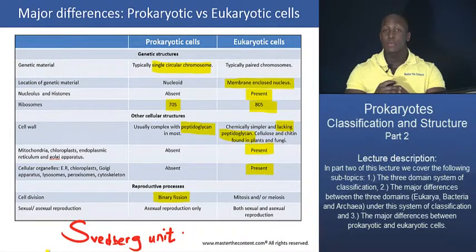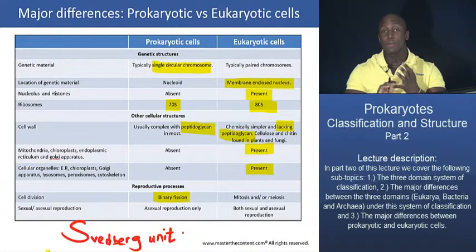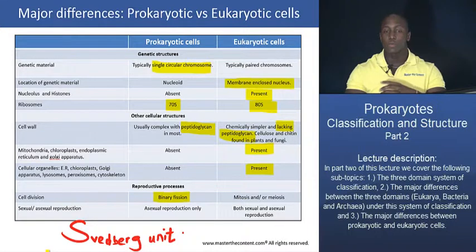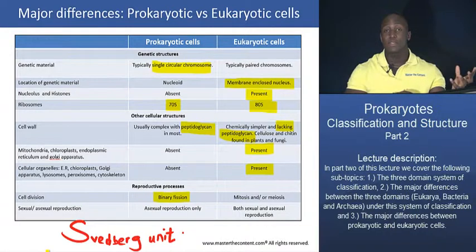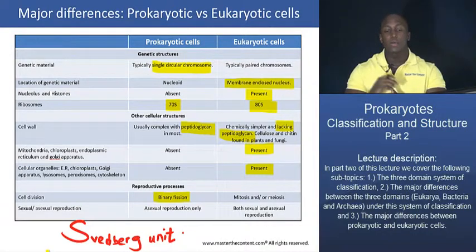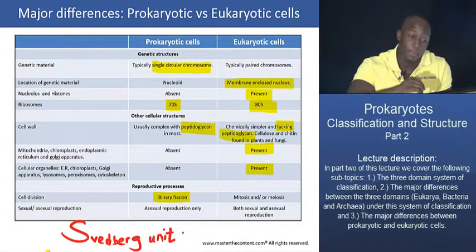Eukaryotic organisms can reproduce both sexually and asexually, depending on the organism. The processes they use are either mitosis, meiosis, or a combination of both. So the primary cell division process in prokaryotes is binary fission, whereas in eukaryotic cells division results from a mitotic or meiotic process. Prokaryotes can only reproduce asexually, although they do have mechanisms for sharing genetic material, which we'll cover later in this lecture.